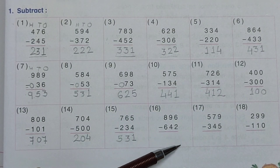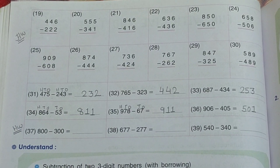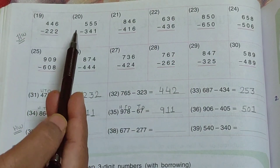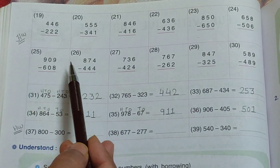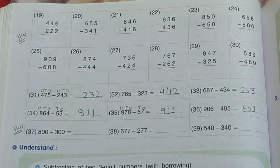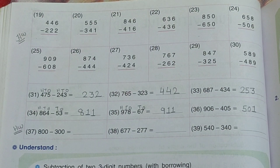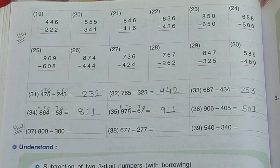Problems sixteen, seventeen and eighteen are the same type of sums — you have to do those in homework. Now see page number ninety-six. Problems nineteen through twenty-nine on page ninety-six are all similar to the previous page. I have already shown you the subtraction method, so do them in your book.